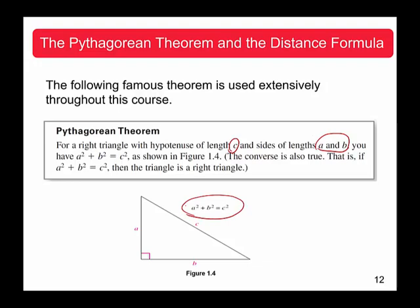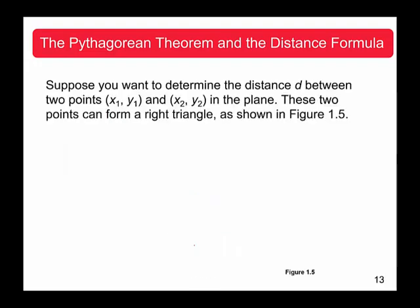The key requirement is that it must be a right triangle with a right angle. We're going to utilize the Pythagorean theorem to prove the distance formula.